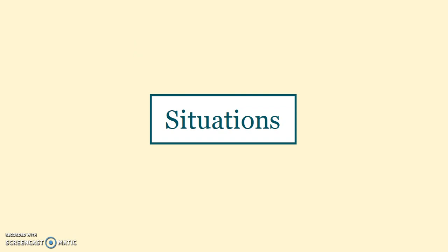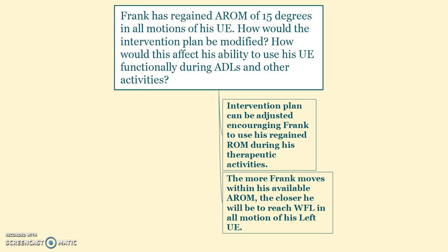Scenario one: Frank has regained active range of motion of 15 degrees in all motions of his upper extremity. The intervention plan can be adjusted to encourage Frank to use his regained range of motion during therapeutic activities. The more Frank moves within his available active range of motion, the closer he will be to reaching functional limits in all motions of his left upper extremity.